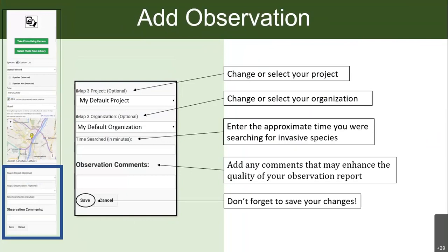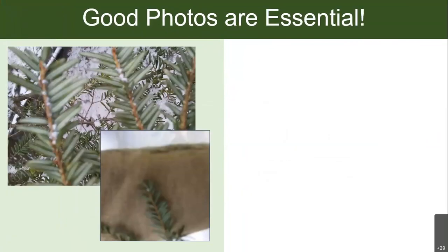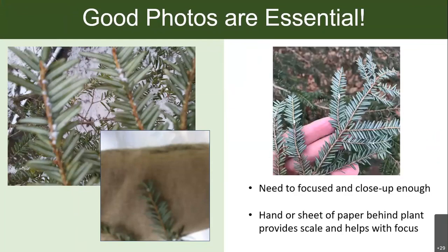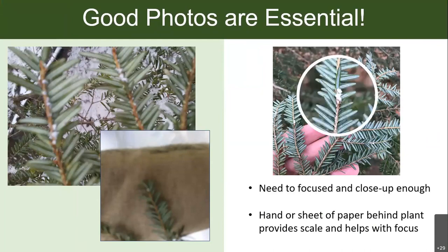Most importantly, don't forget to save your changes. When taking photos, make sure they're good. The photos of hemlock woolly adelgid on the left are kind of fuzzy — it's hard for our folks confirming species presence to tell what that is. So get really close and clear. Your phone has an autofocus function, so make sure you're focusing on the species itself, not the background. A really good hint is to put a piece of paper behind it or lay it on your hand. I always like to put some sort of scale object — like a coin — next to it, because photos are hard to interpret when out of context. Having that scale object is really helpful.